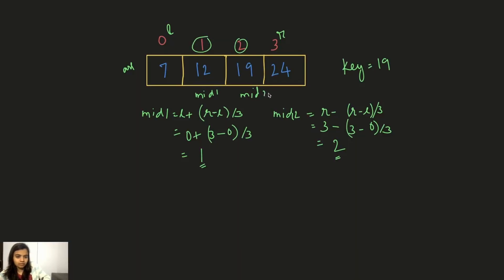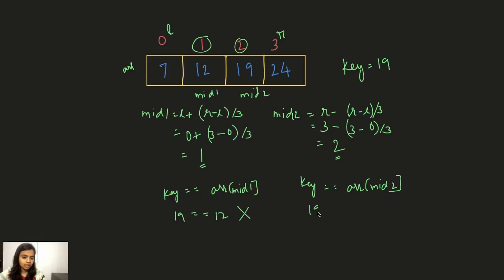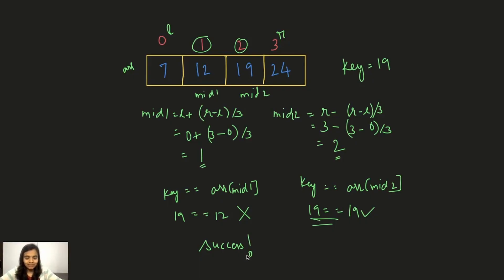We compare: is key equal to arr[mid1]? arr[1] is 12 — no. Is key equal to arr[mid2]? arr[2] is 19 — yes! We have successfully found our element using ternary search. If you have questions or suggestions, put them in the comments below. If you liked this video, please like and subscribe. Thank you!